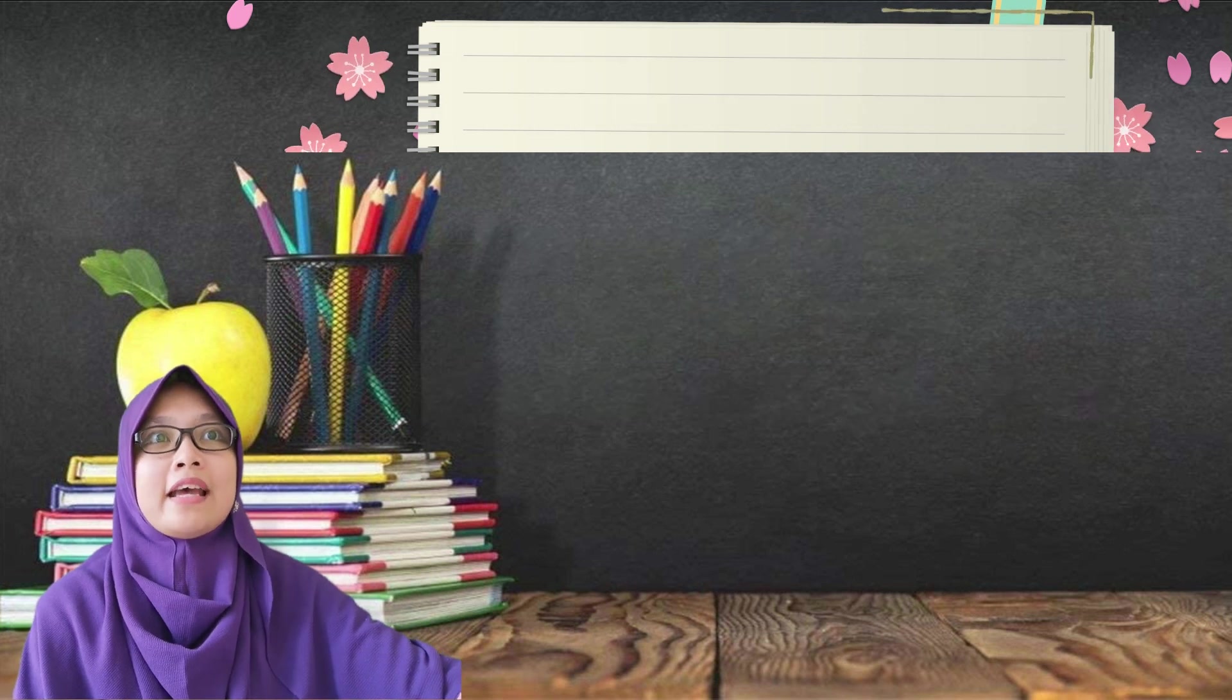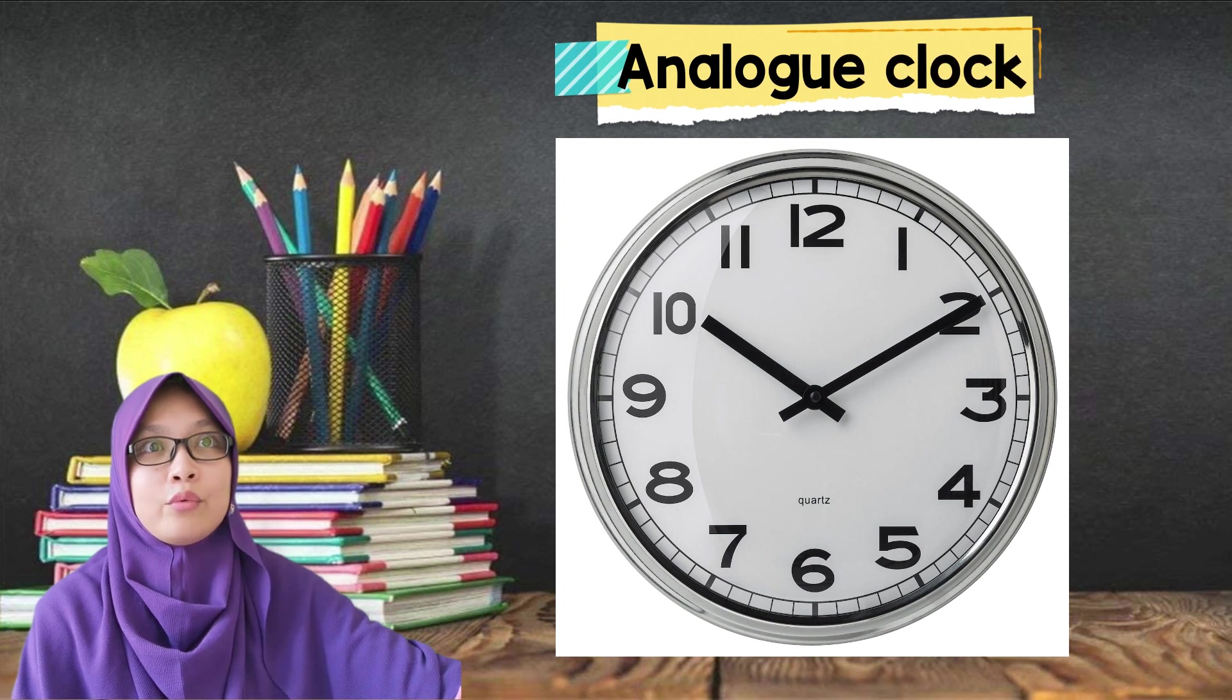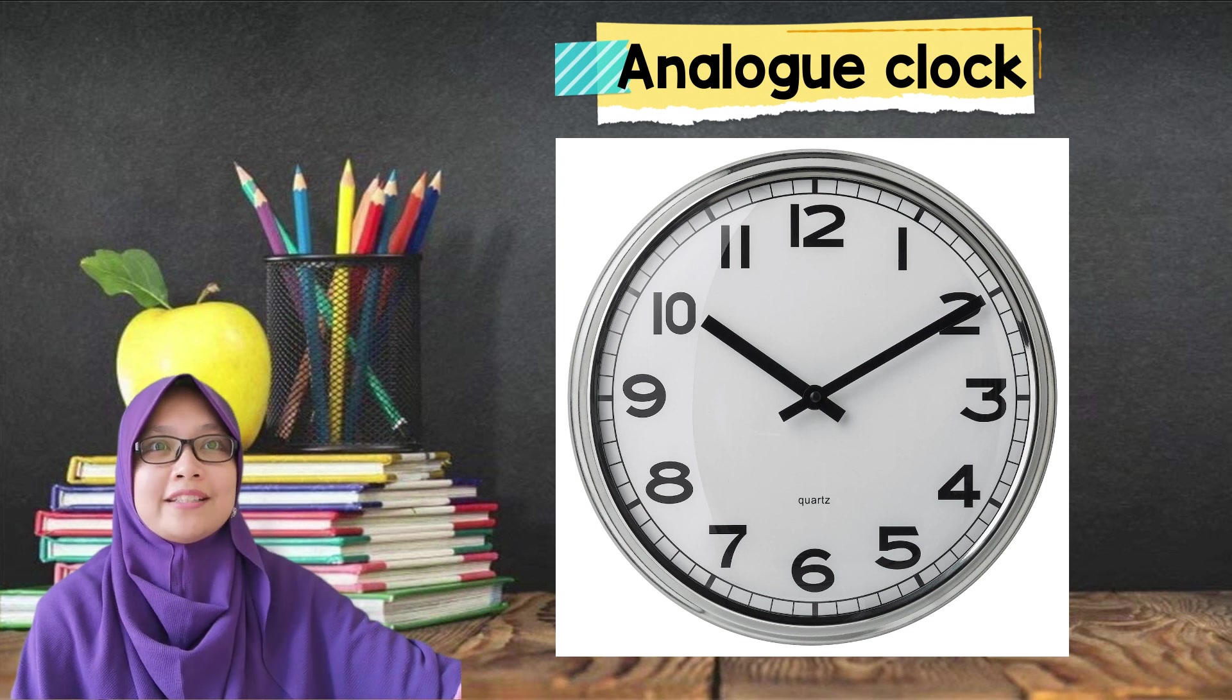What is an analog clock? An analog clock is a clock or watch that has moving hands and usually hours marked from 1 to 12 to show you the time.